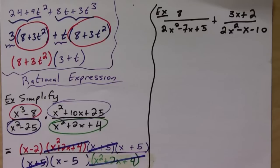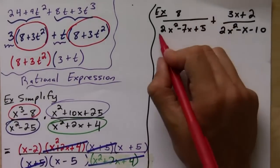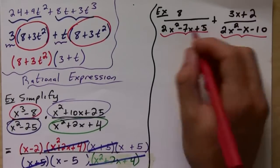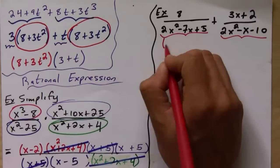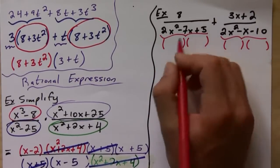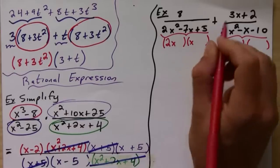Okay, so the first thing you need to do is you need to factor the denominators, because you need to find the least common denominator and you can't do that unless you factor these. So to factor this guy, just like we've been doing, here we're going to do 2x and x...